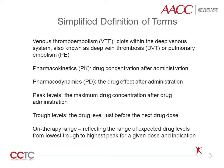Pharmacokinetics is drug concentration after administration. Pharmacodynamics is the drug effect after administration. Peak levels are the maximum drug concentration after administration. Trough levels are the drug level just before the next dose. On-therapy range is a commonly used term to address DOACs, as this class of drugs does not have therapeutic ranges. An on-therapy range reflects the expected drug concentration from the lowest trough to the highest peak value for a given dose and indication.